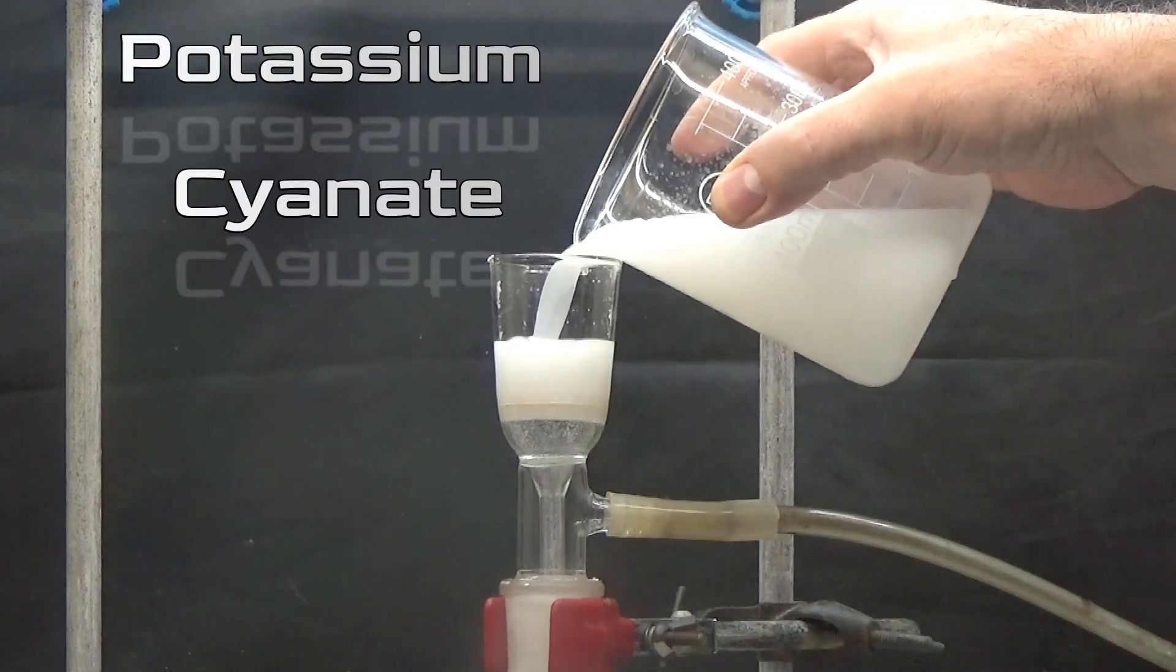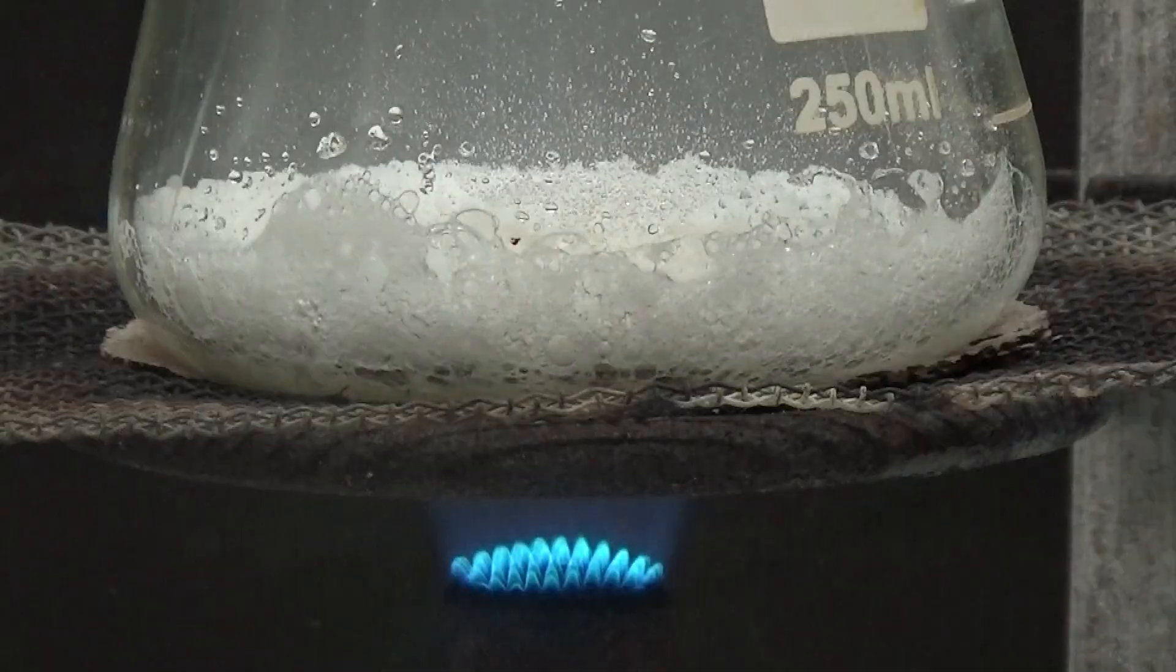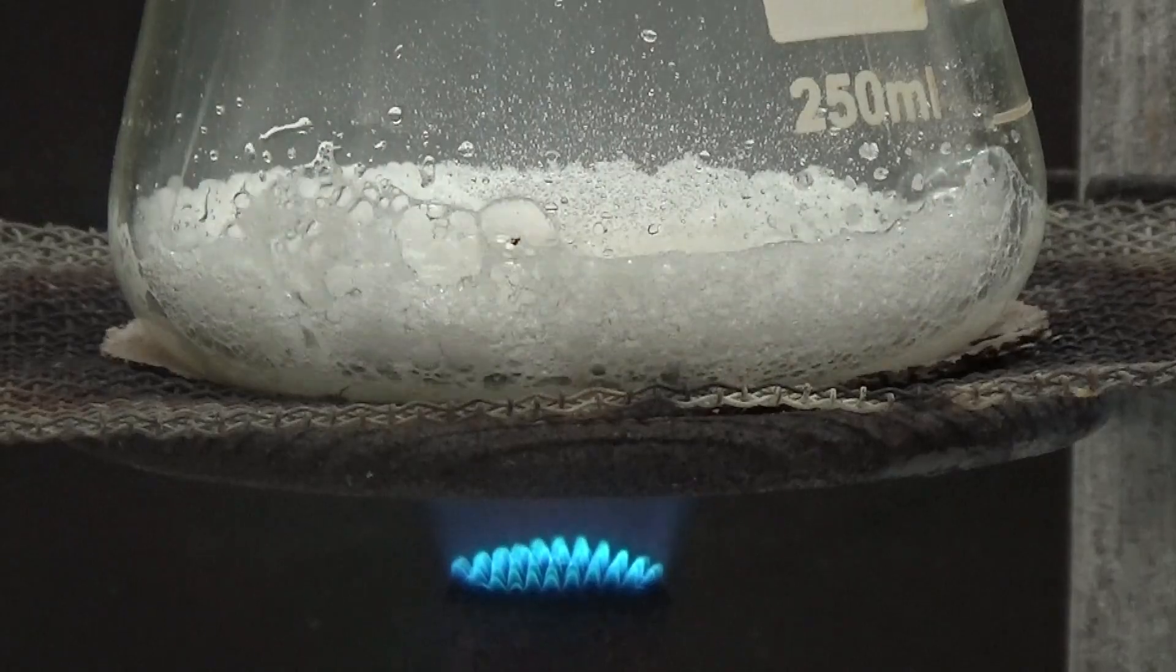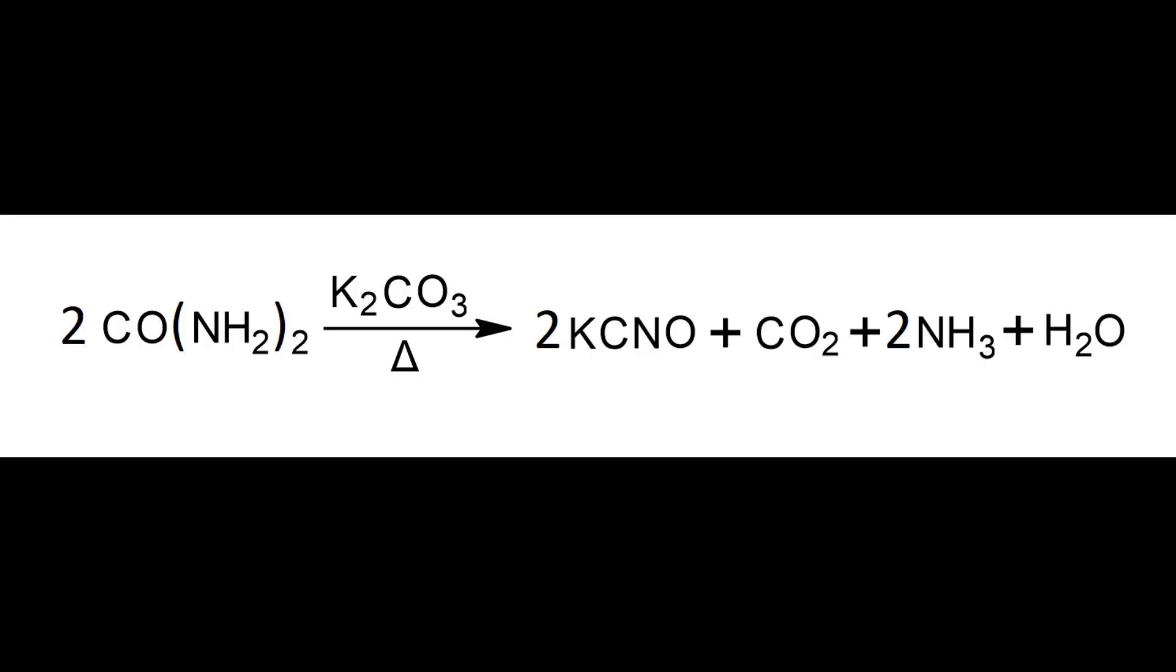In this video, we are going to obtain potassium cyanate. Potassium cyanate is obtained by fusion of urea and anhydrous potassium carbonate, with the release of ammonia and carbon dioxide.